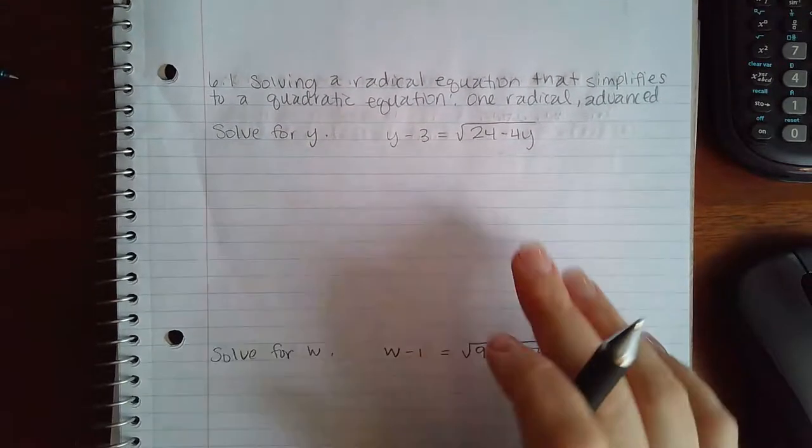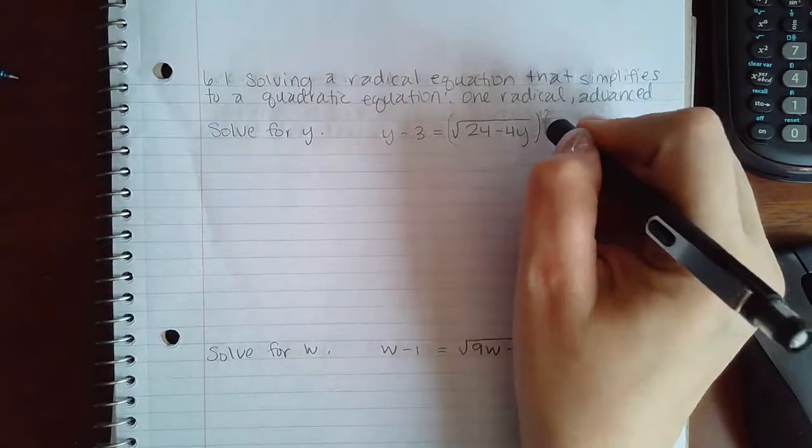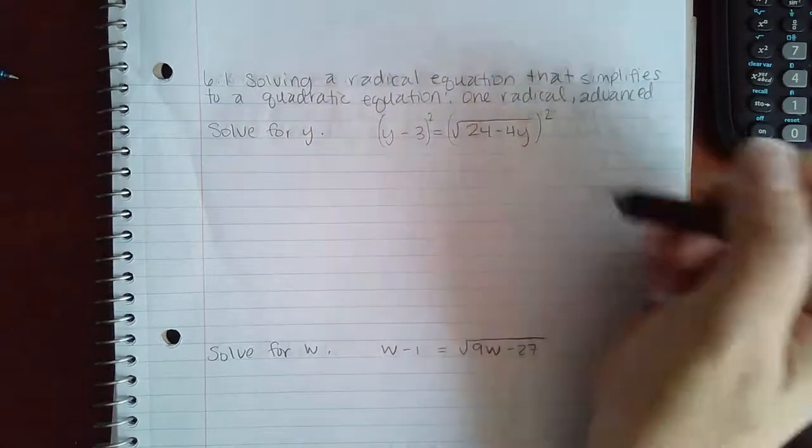So the same thing, I do not need to isolate my radical, it's already good to go. But I do need to square both sides of my equation.